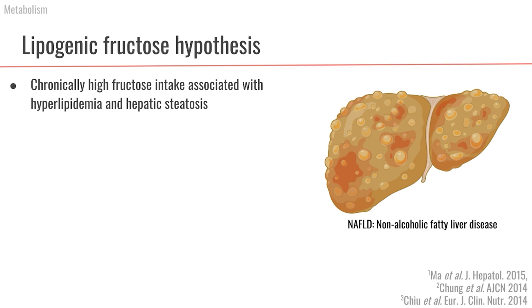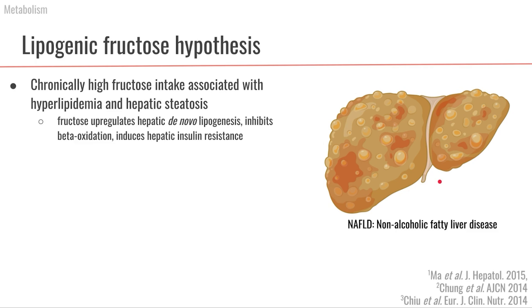This idea comes primarily from animal studies showing that chronically feeding high fructose is associated with hyperlipidemia — higher levels of fats in the blood — as well as hepatic steatosis, which is the accumulation of fat in the liver shown in this picture, contributing to non-alcoholic fatty liver disease. Within these animal studies, fructose was shown to upregulate hepatic de novo lipogenesis, inhibit beta-oxidation of fatty acids, and induce hepatic insulin resistance.